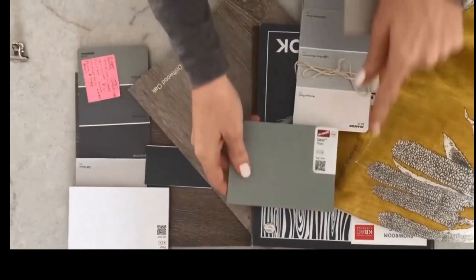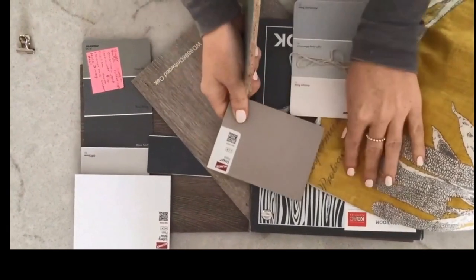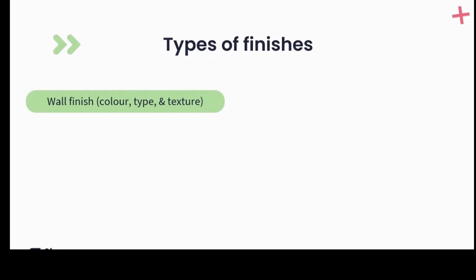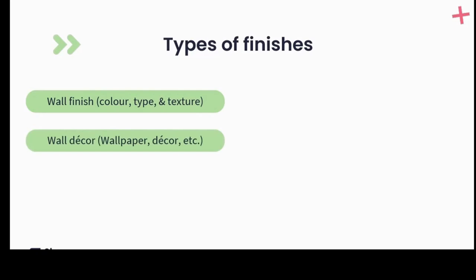We need to present everything, including our samples, to the client to get their full buy-in of our finish selection. As the designer, we need to specify finishes for the entire space and provide sample selections for each finish. Here are some sample finishes I use as a checklist. Starting with wall finishes — always think about what wall finish you're allocating, considering color, type, and texture. Then think about wall decor: wallpapers, cladding, decor — anything fixed to a wall — and provide a sample for that.